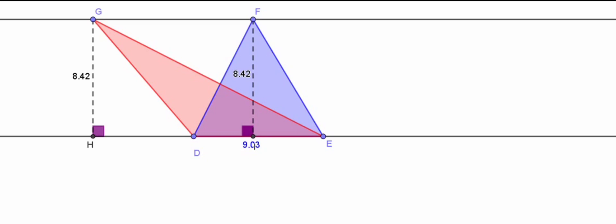Here we take triangles DEF and DEG which are on the same base DE and between the same parallels. Area of triangle DEF is equal to half DE into FA, that is base 9.03 into 8.42 is the height, and it is coming to be 38.01. Whereas the area of DEG also is coming to be the same.